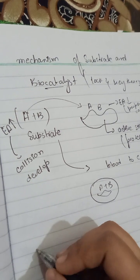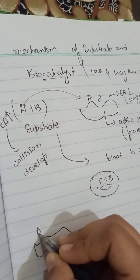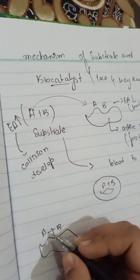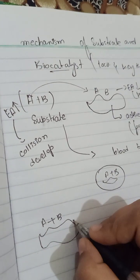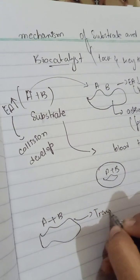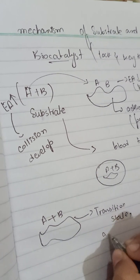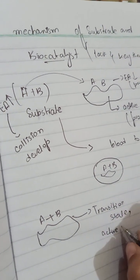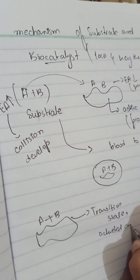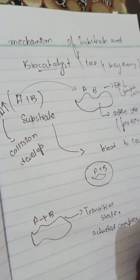So after that, what will occur? This is, for example, A plus B on the active site. And this is a transitional state. Transitional state. Activated complex or enzyme substrate complex.